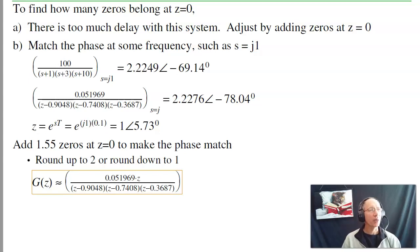A second way is you can actually calculate it. Pick a point like s = j1, calculate the phase shift at that frequency. My discrete time system should have the same gain and same phase shift. It has the same gain, I've got the poles right, DC gain's right, the phase shift is off. Well, each z adds five degrees of phase shift. So we can add 5.7 degrees. How many times do I have to add 5.73 degrees to get 69.1? And the answer is 1.55.